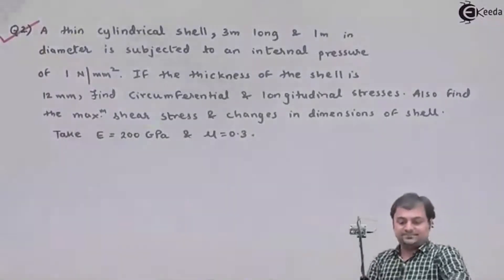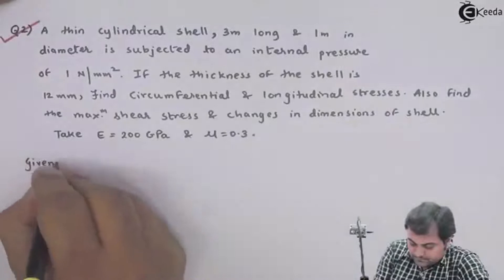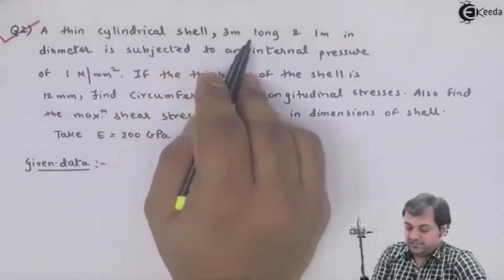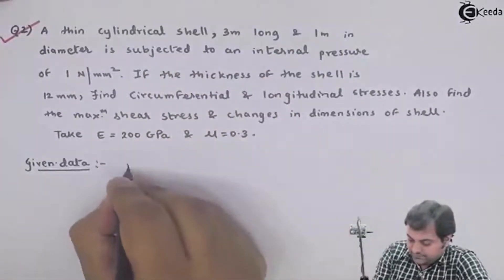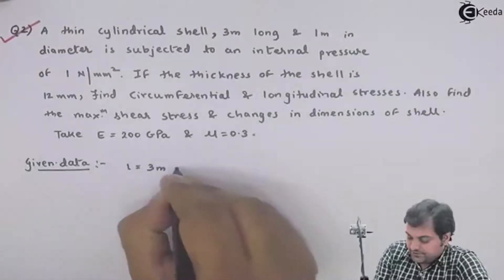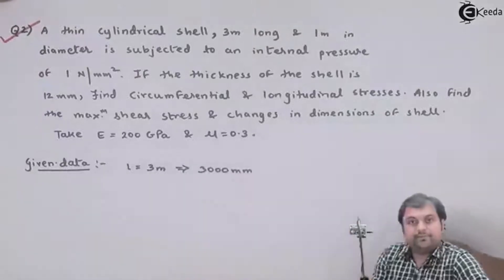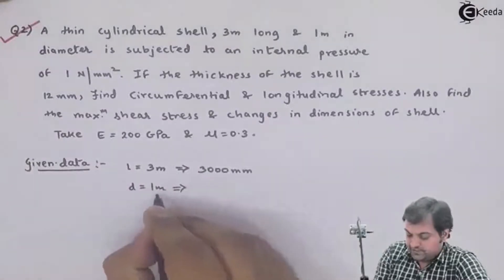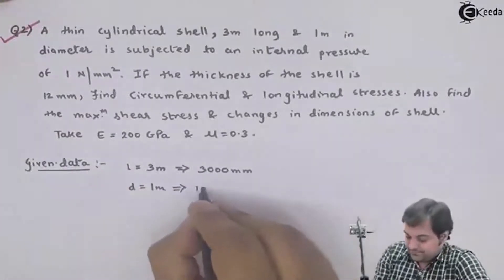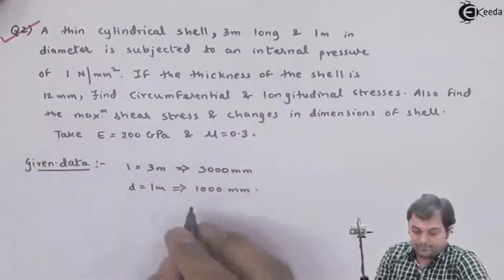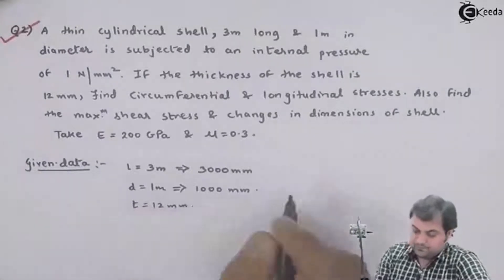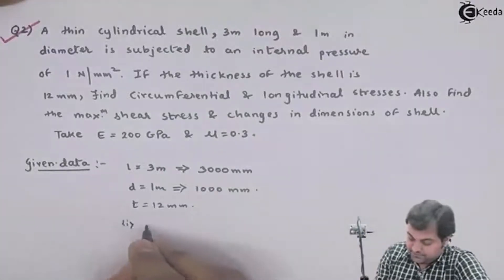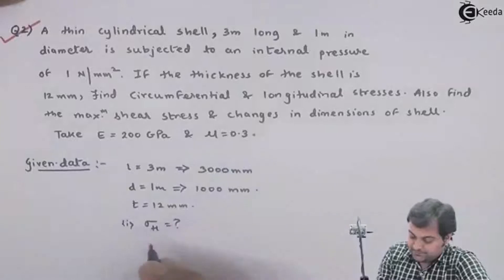I will write the data first. It is given that the thin cylindrical shell is 3 meters long — we can convert it to 3000 mm. The diameter is 1 meter, which we consider as the internal diameter, converted to 1000 mm. The thickness of the shell is 12 mm.